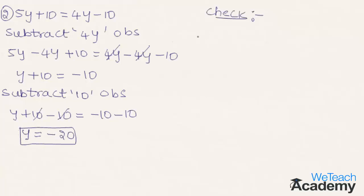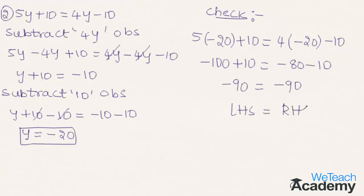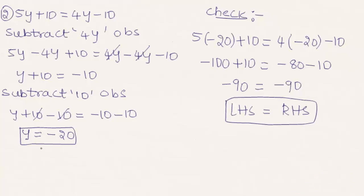Now let us substitute y equal to minus 20 in the equation. We get 5 into minus 20 plus 10 equal to 4 into minus 20 minus 10. On the LHS, 5 into minus 20 is minus 100, plus 10 gives minus 90. On the RHS, 4 into minus 20 is minus 80, minus 10 gives minus 90. LHS equals RHS, so the solution of the given equation is y equal to minus 20.